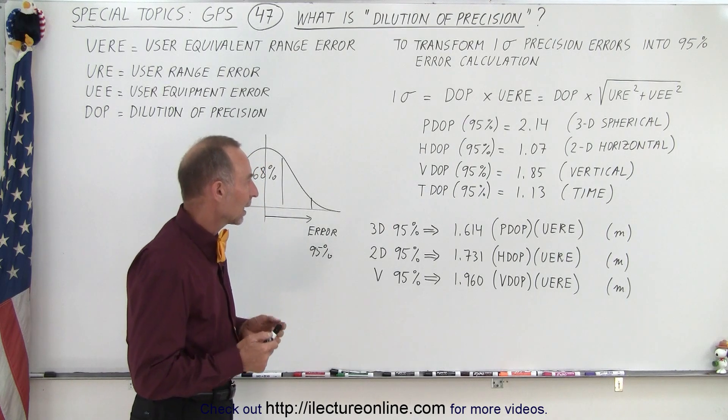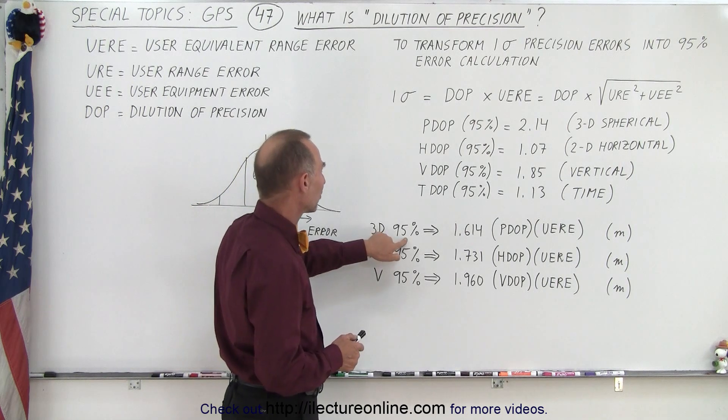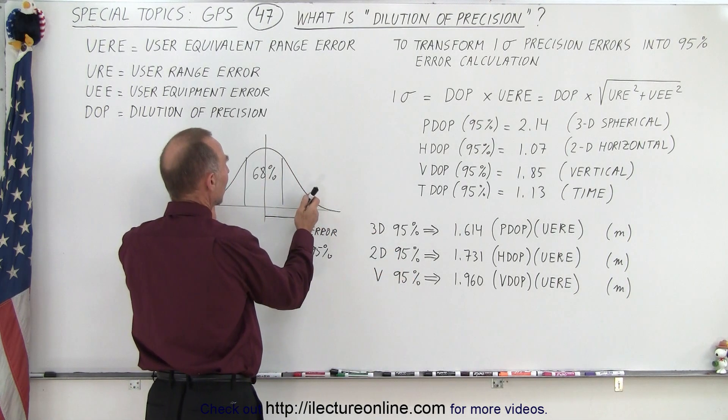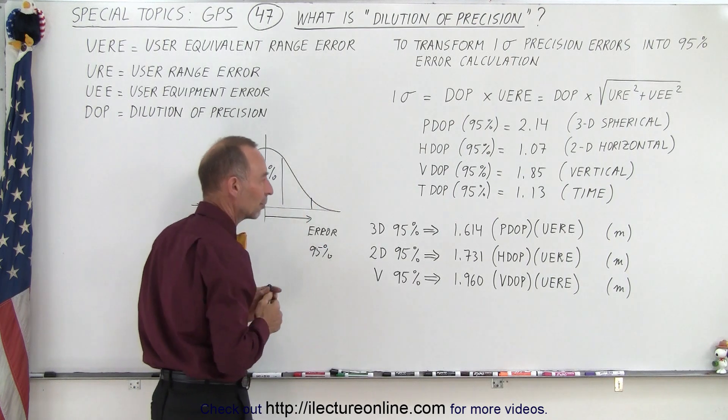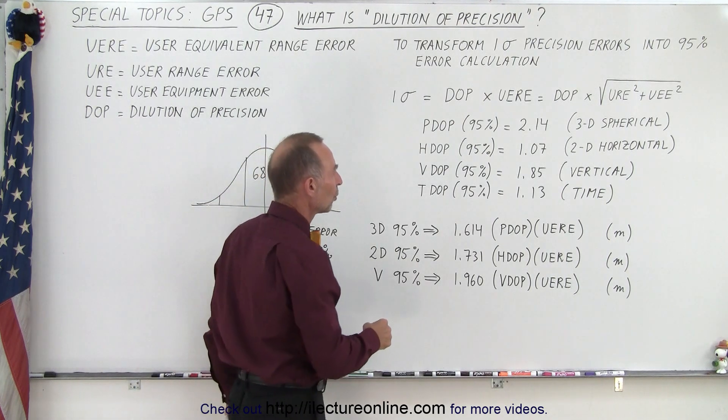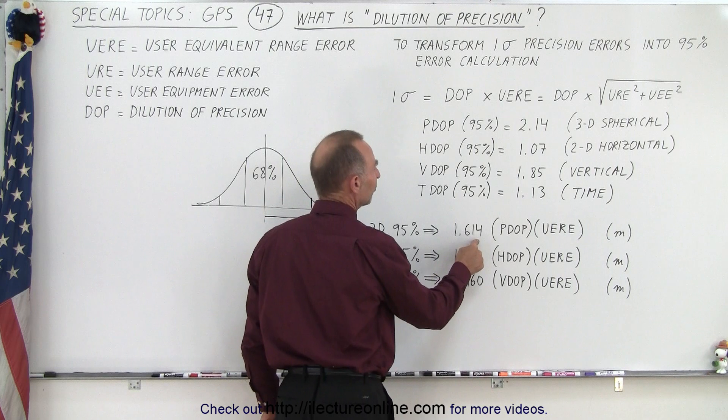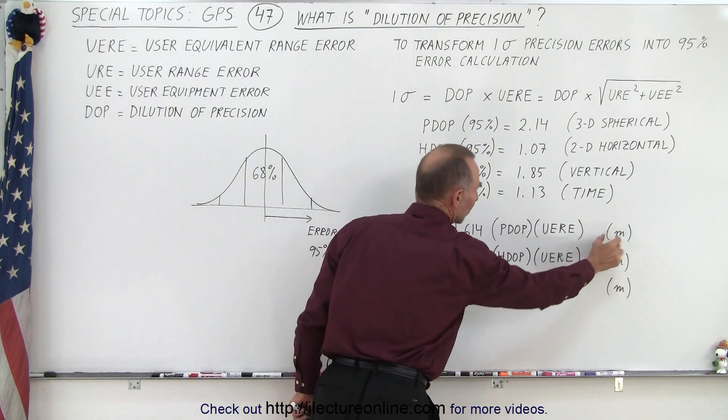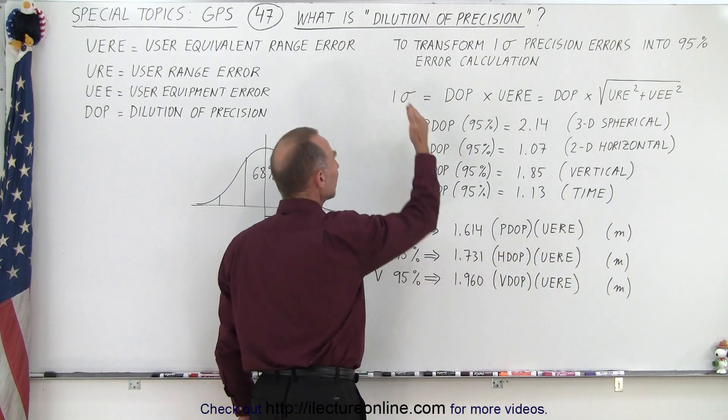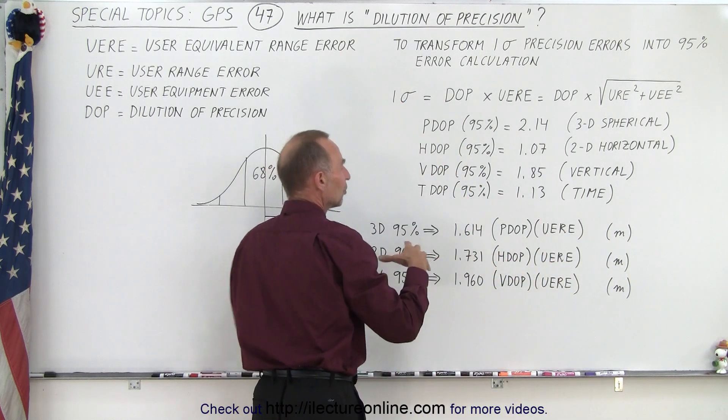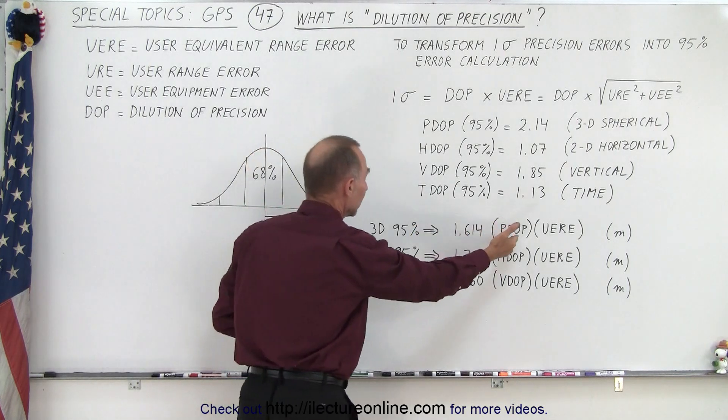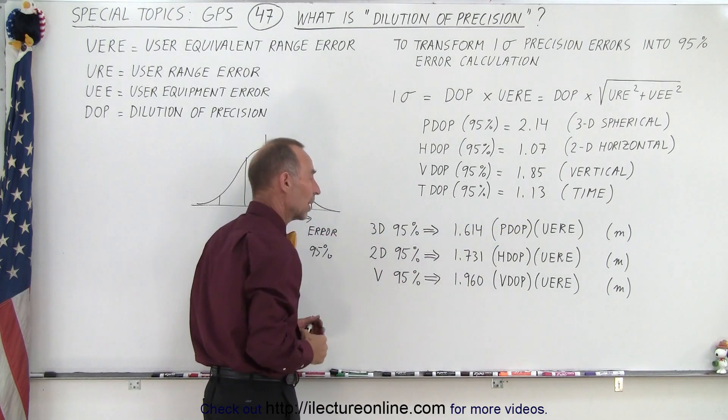So then, to calculate the 95% certainty error, in other words, how far out do we have an error so that 95% of all our measurements fall within that range, we take the number 1.614, which in the three dimensions, for PDOP times the UERE, and of course the result is in meters, will give us a 95% range. So that's a way to take the three-dimensional direction and turn it from one sigma into essentially a two sigma problem. Or, no, it's not a problem, it's a two sigma range estimation.